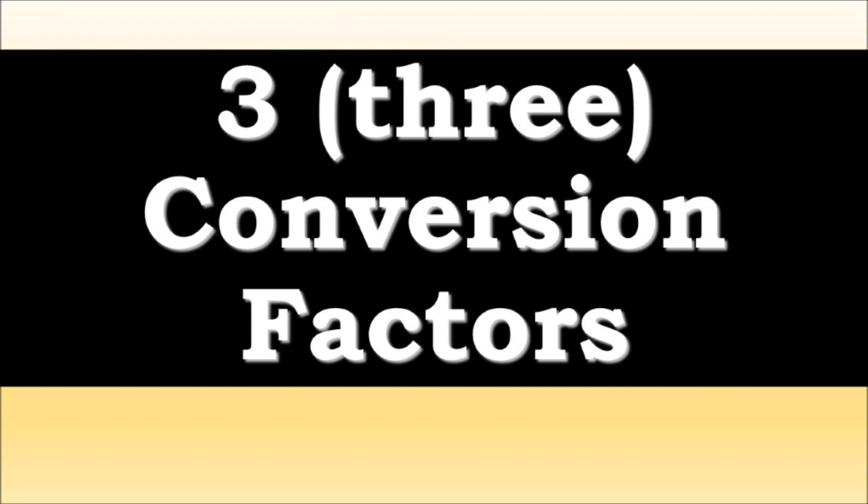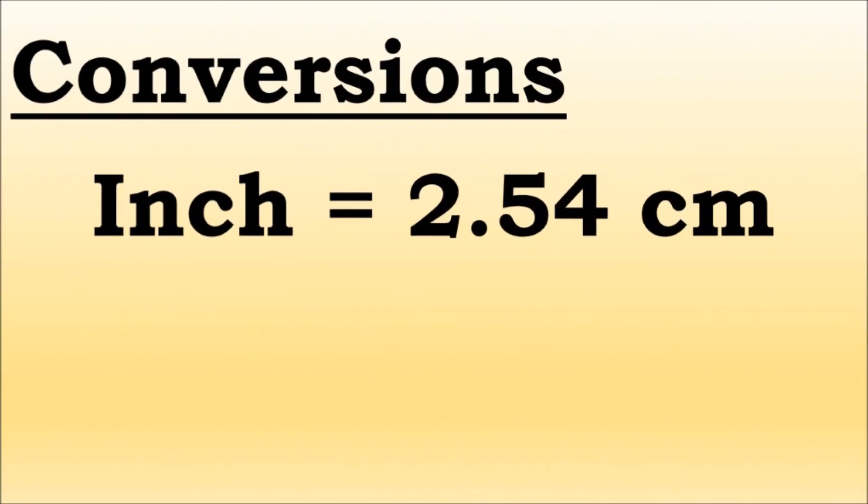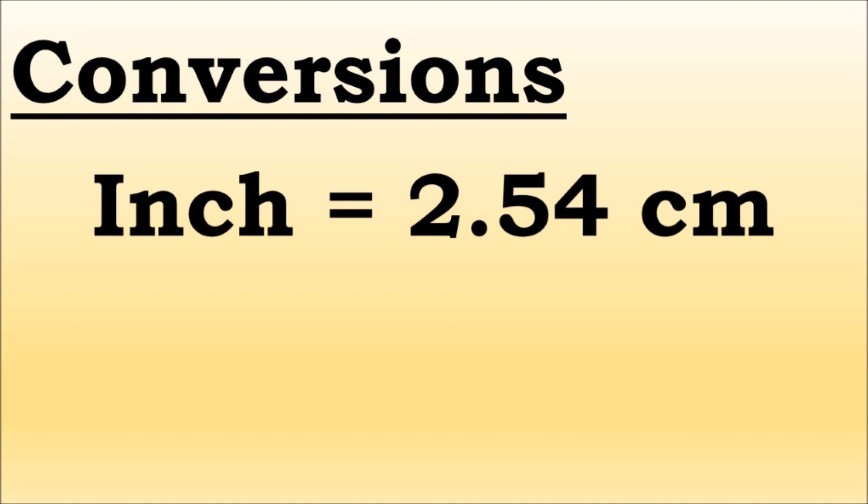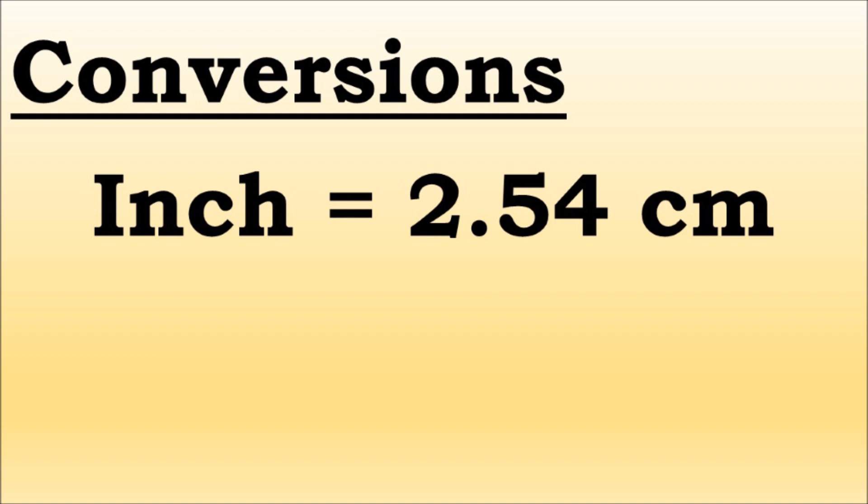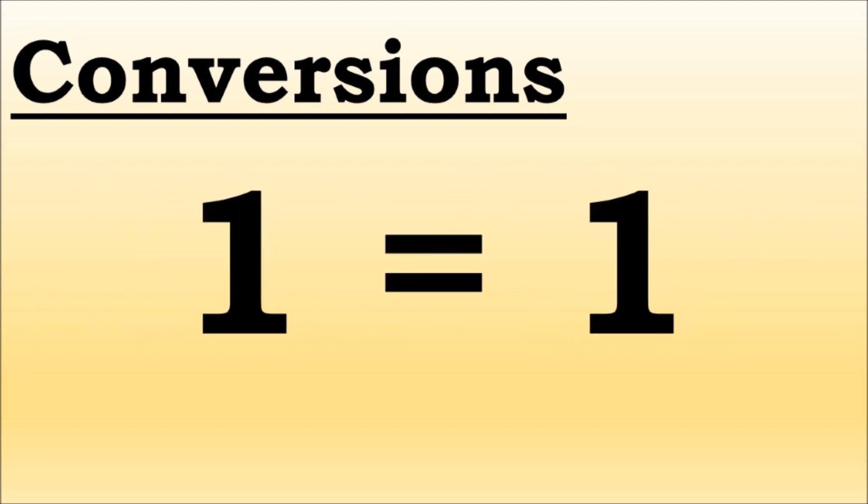Three conversion factors are needed. Our first conversion factor shows that 1 inch is equal to 2.54 centimeters. This measurement is exact. The conversion factors can be made into ratios that are both equal to each other. Both factors can be made into 1.